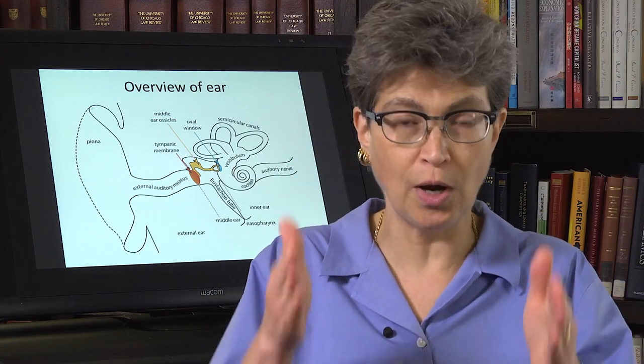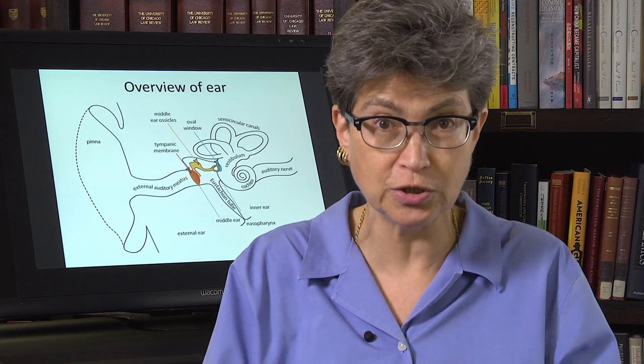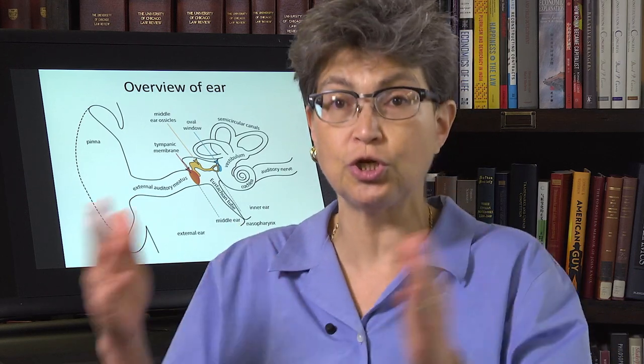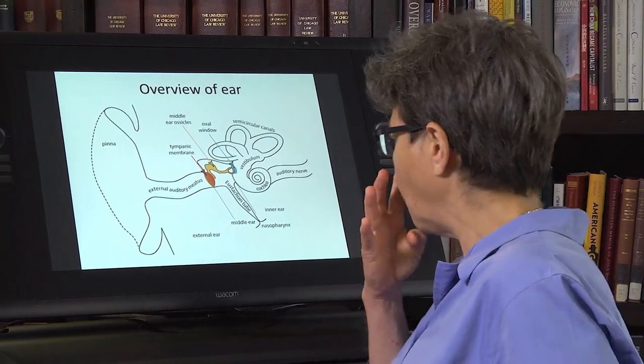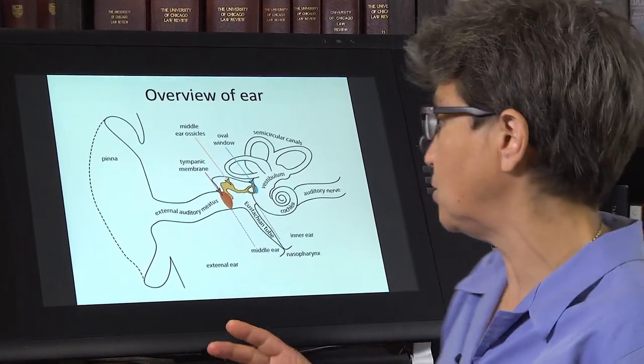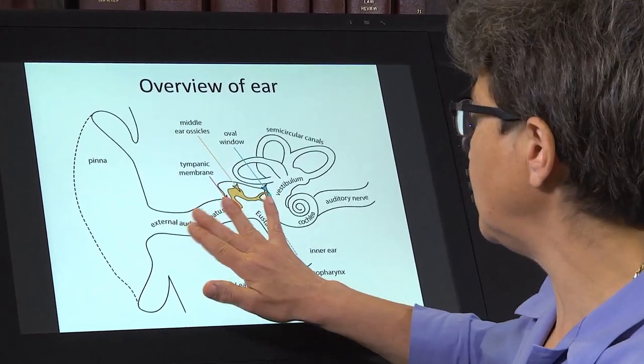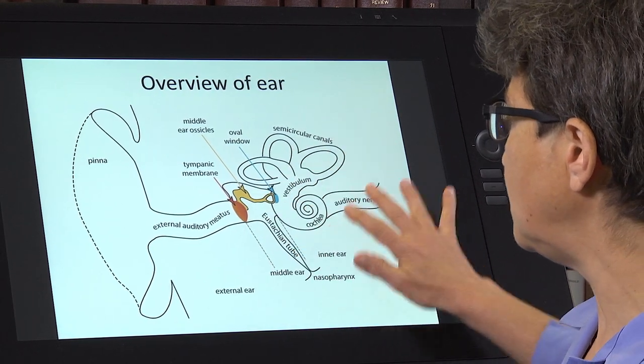All right, so that's why, that's the justification why we're going to spend the bulk of our time in the ear, and then we're going to jump over to cortex. When we talk about the ear, there are three parts to the ear. There's the external ear, the middle ear, and the inner ear.